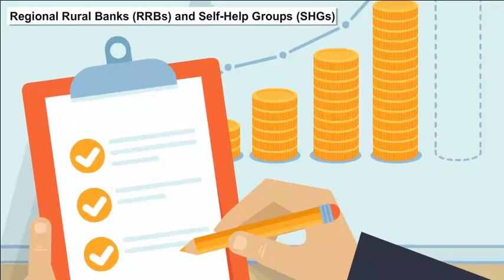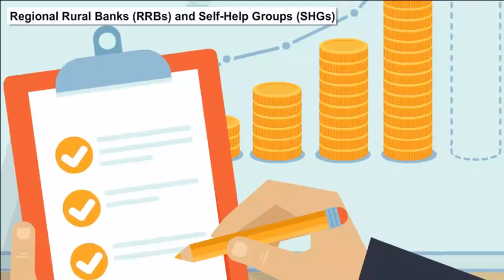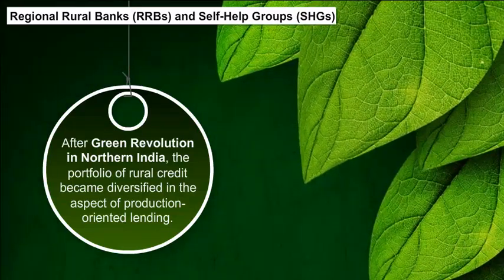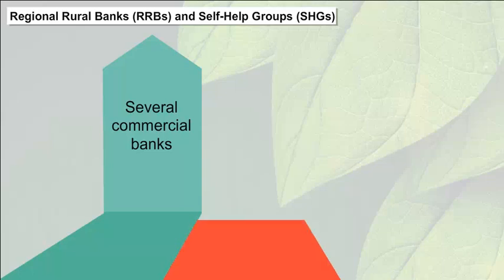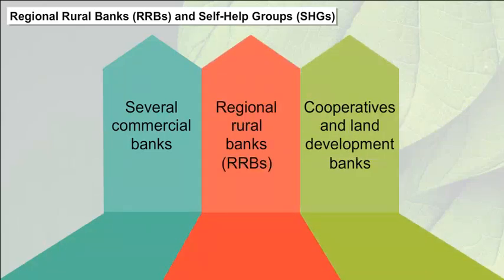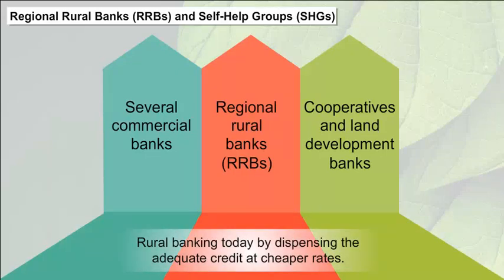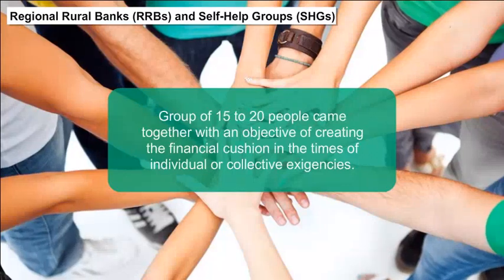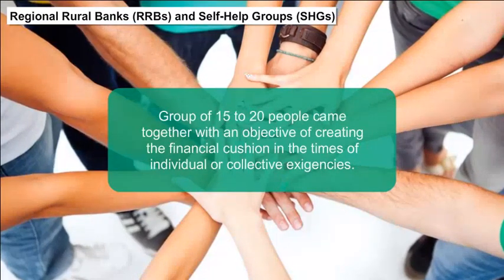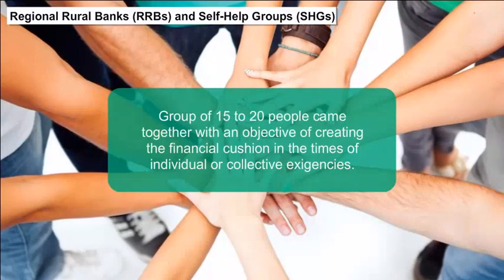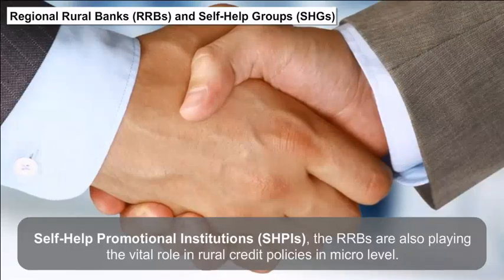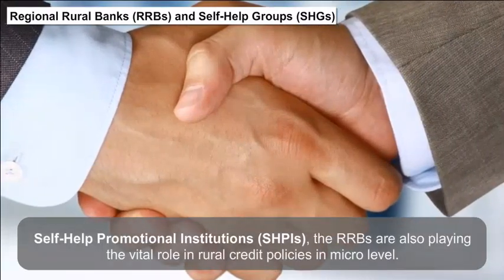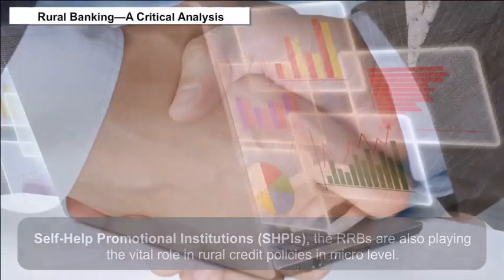Regional rural banks (RRBs) and self-help groups (SHGs) also play key roles. After the Green Revolution in Northern India, the portfolio of rural credit became diversified in the aspect of production-oriented lending. Several commercial banks, RRBs and land development banks have structured rural banking today by dispensing credit at cheaper rates. The self-help groups or SHGs consist of groups of 15 to 20 people who came together with an objective of creating a financial cushion in times of individual or collective exigencies. By creating Self-Help Promotional Institutions (SHPIs), RRBs are also playing a vital role in rural credit policies at the micro level.